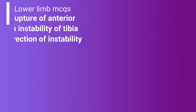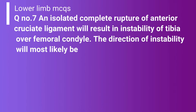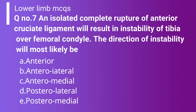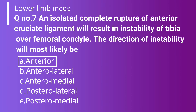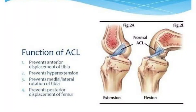Question 7: An isolated complete rupture of the anterior cruciate ligament results in instability of the tibia over the femoral condyle. The direction of instability will most likely be: Option A: Anterior. Option B: Anterolateral. Option C: Anteromedial. Option D: Posterolateral. Option E: Posteromedial. This question asks about the function of the anterior cruciate ligament. The correct answer is Option A — anterior — because the anterior cruciate ligament prevents anterior displacement of the tibia on the femoral condyle.